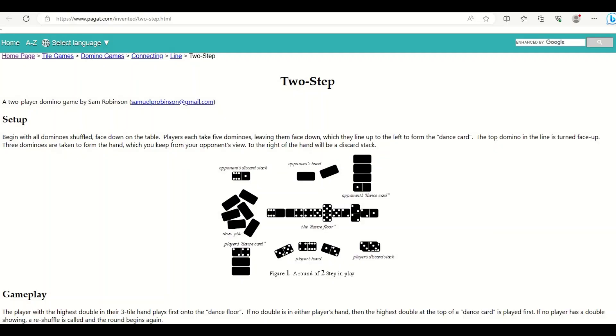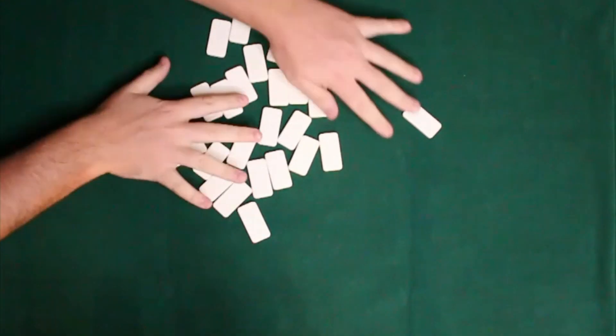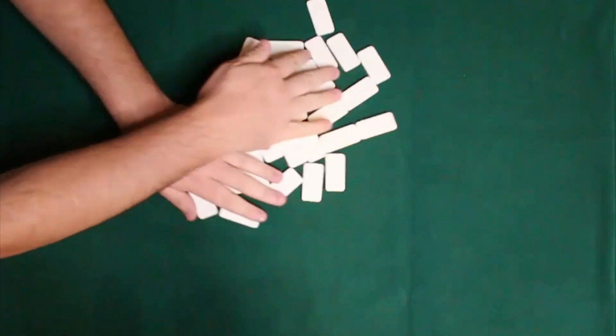So this game comes to us from paget.com under the invented section. They also have domino games in there. After reading the rules for a split second I realized this is a card shedding game similar to Skip-Bo and Spite and Malice and plenty of others of the same variety.